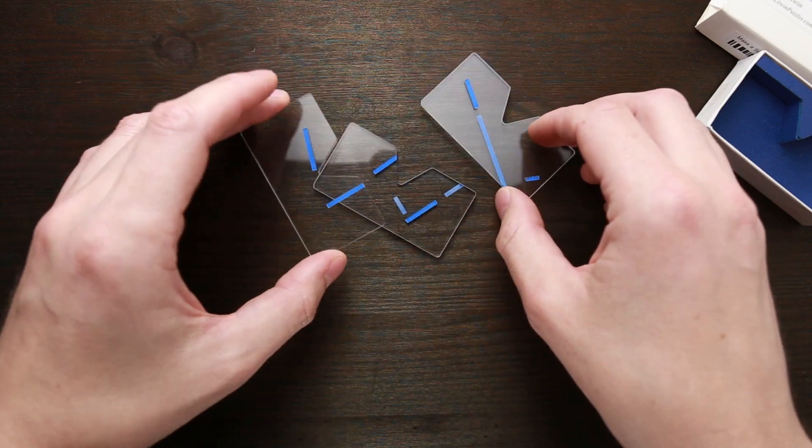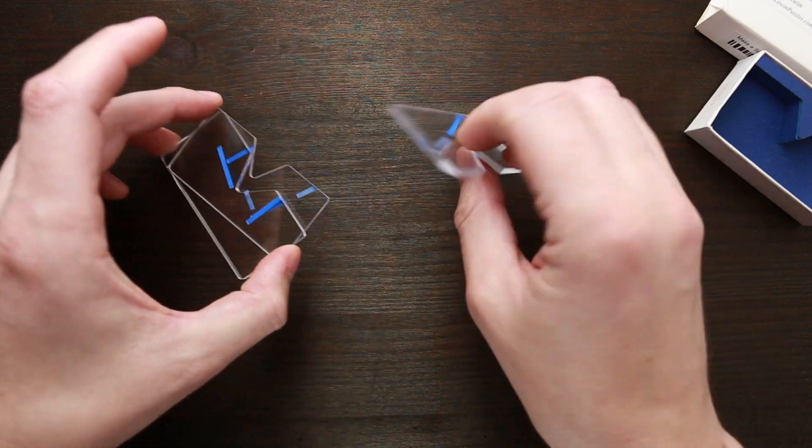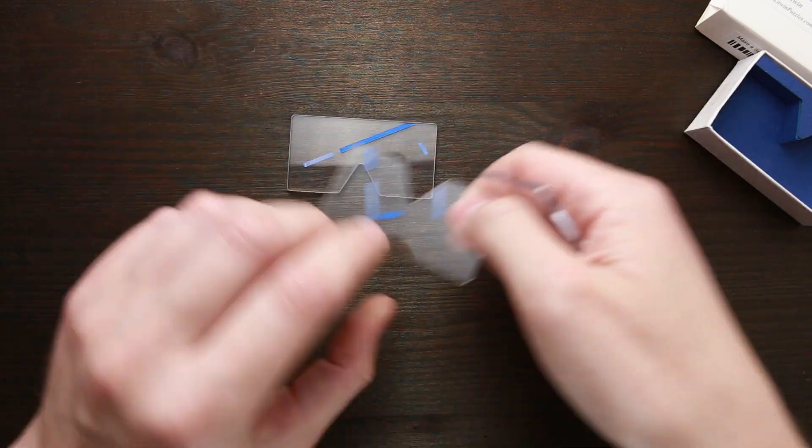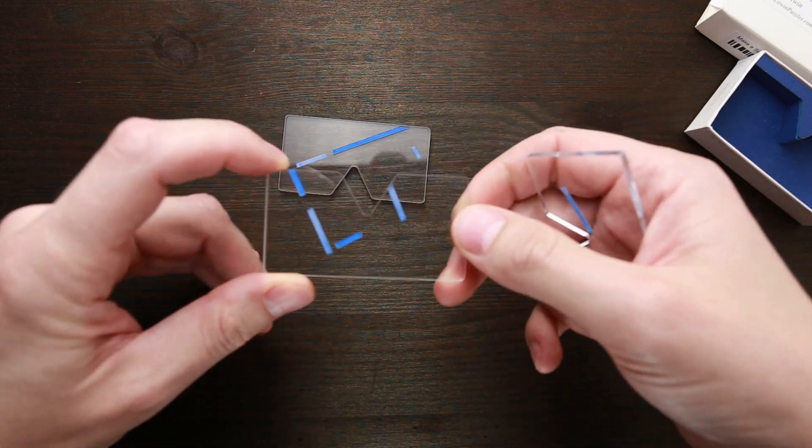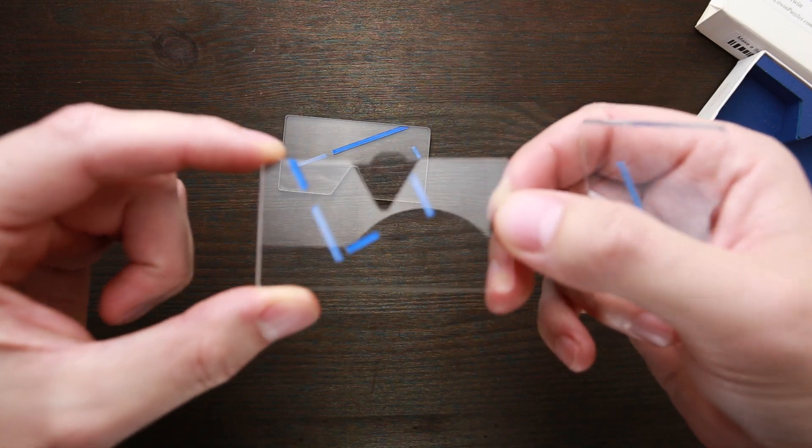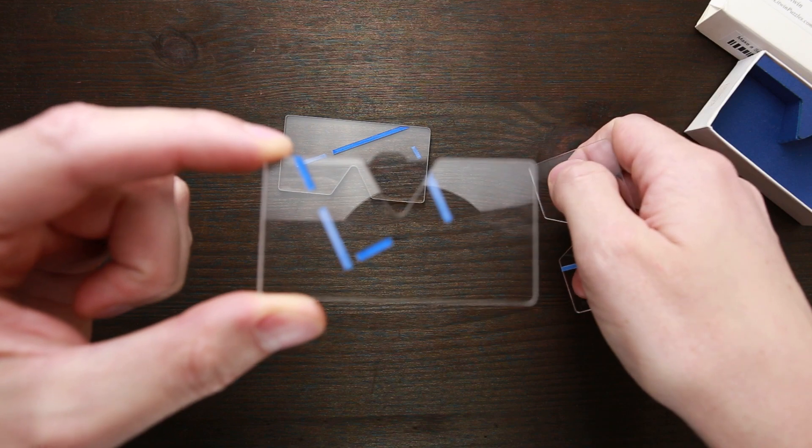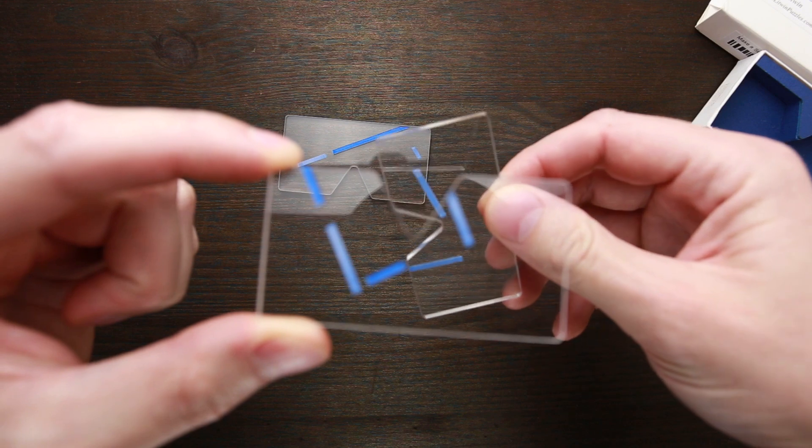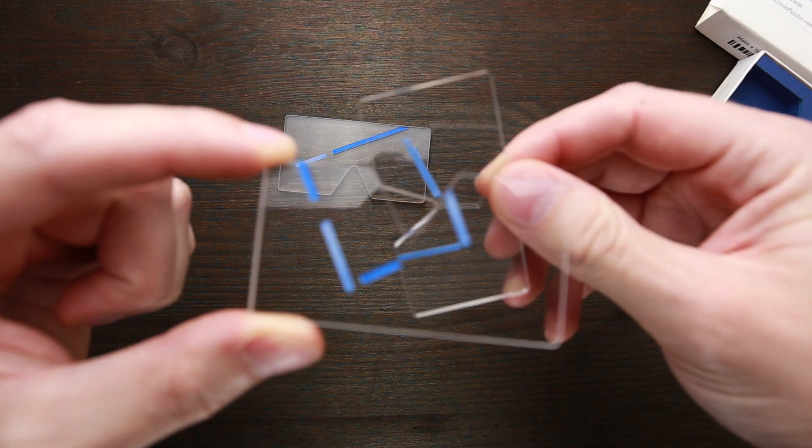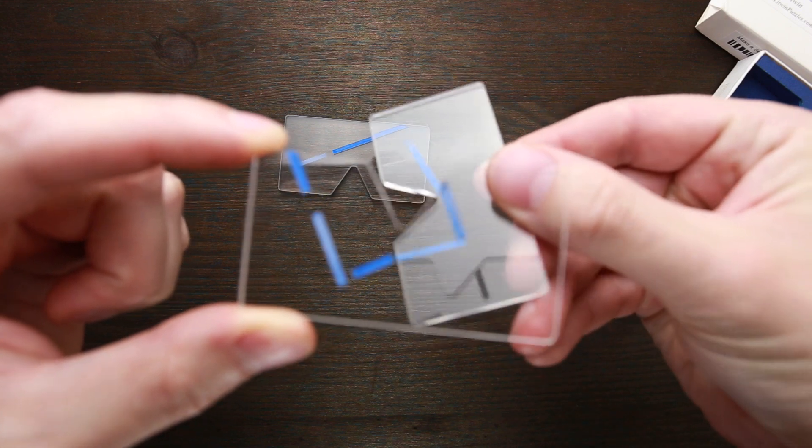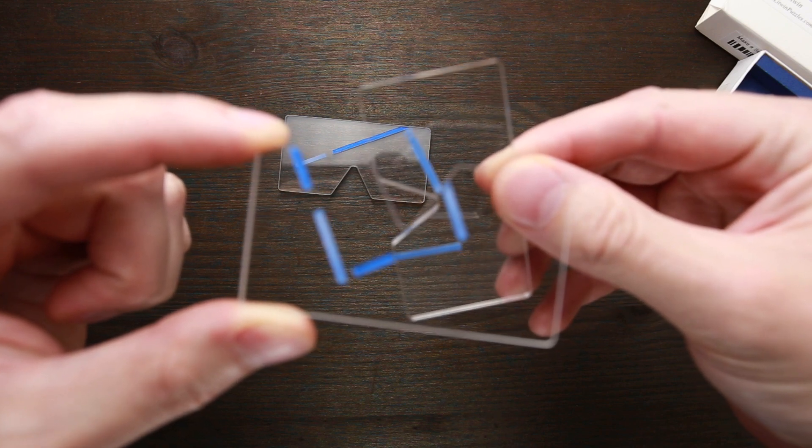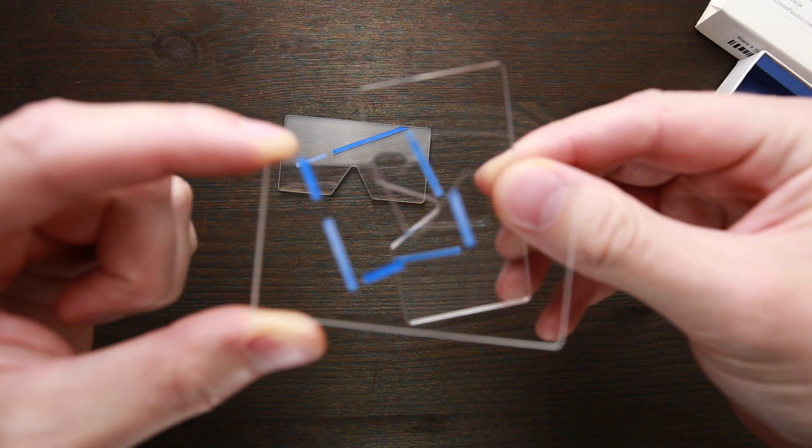So the first idea that I got how to solve this puzzle was following. I took this part, put it on a table. Then I took this part. I put it something like this. And the third part is supposed to be between these two parts.